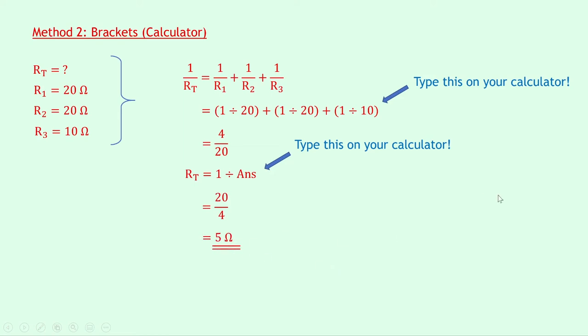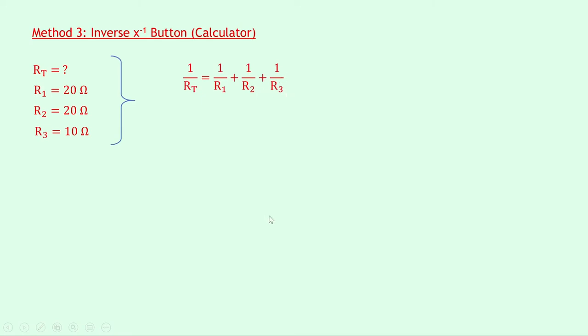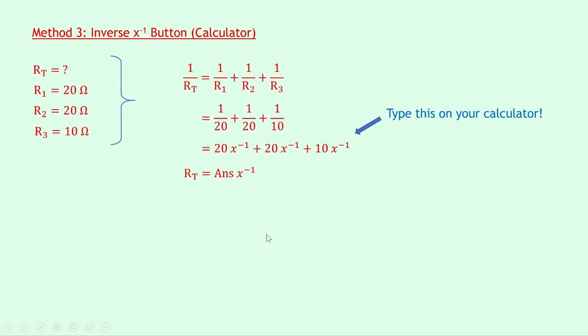We should expect the same answer as method 1 since it's the same question. The last method, method 3, is what I call the x to the minus 1 button method, which also uses a calculator — specifically a button on your calculator used for this kind of question. Writing down what we know: R1 is 20 ohms, R2 is 20 ohms and R3 is 10 ohms. Substituting into our equation gives 1/20 + 1/20 + 1/10. On your calculator you input: 20 x⁻¹ + 20 x⁻¹ + 10 x⁻¹. Then to flip both sides and find RT, press the x⁻¹ button on your answer, giving you 20/4 which is the same as 5 ohms.